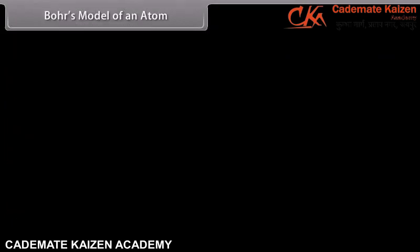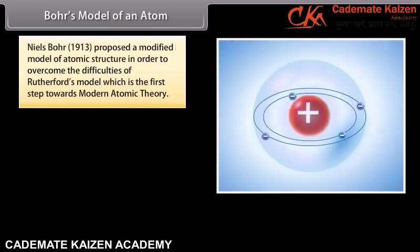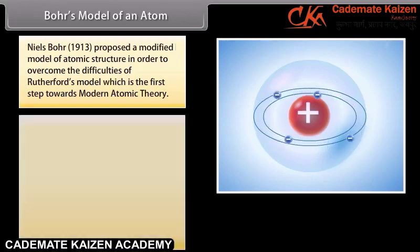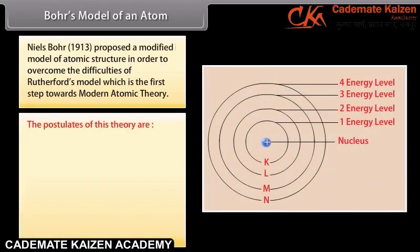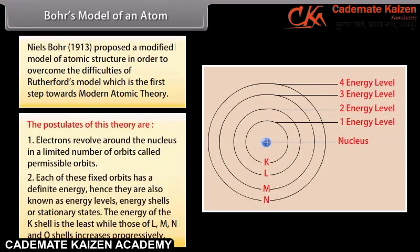Bohr's Model of an Atom. Niels Bohr, in 1913, proposed a modified model of atomic structure in order to overcome the difficulties of Rutherford's model, which is the first step towards modern atomic theory. The postulates of this theory are: 1. Electrons revolve around the nucleus in a limited number of orbits called permissible orbits. 2. Each of these fixed orbits has a definite energy, hence they are also known as energy levels, energy shells, or stationary states.